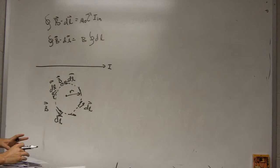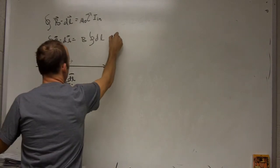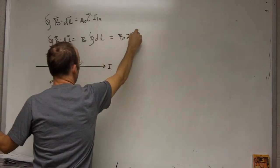So now if I go around the loop and integrate the length, I get the length of the loop. In this case, it's a circle. So it's going to be B times 2 pi R.